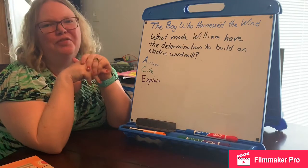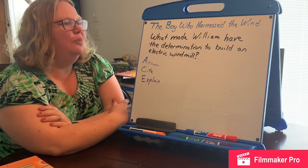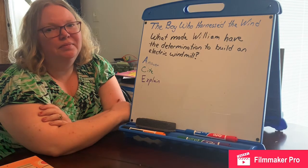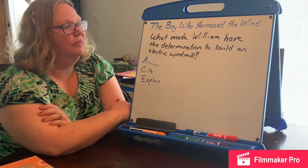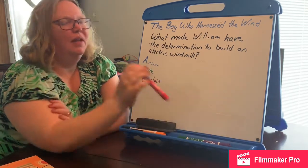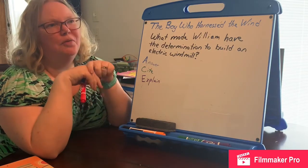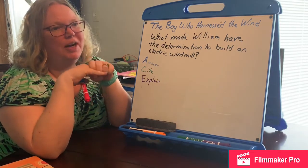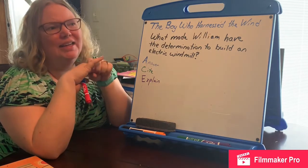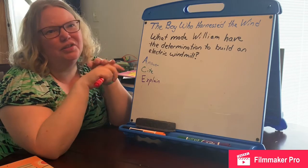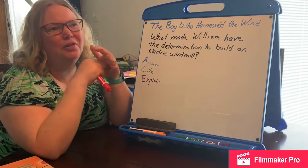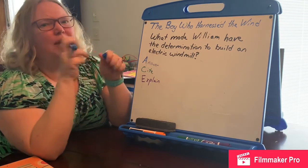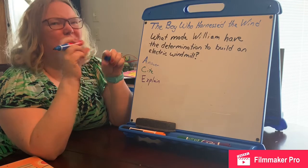Let's go back to our question now that we've looked at that evidence. What made William have the determination to build an electric windmill? I forgot to say wind. The town was so poor they couldn't have electricity. They had to save their food, and this story takes place in Africa where they have to pay to go to school — we're lucky we don't. So they no longer had money to send William to school. I think we can make an inference that William's family was very poor.